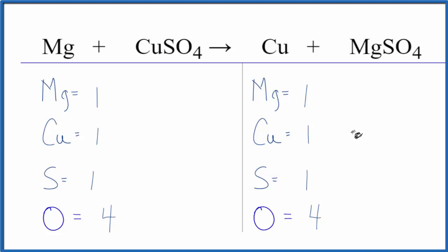Few things to note: this is a single displacement reaction. The magnesium comes in and it pushes the copper out, so the copper over here is all by itself. And now the magnesium and the sulfate, that SO4, they're bonded together.